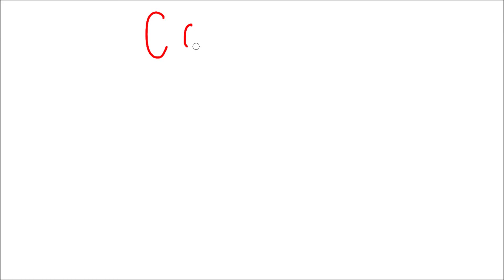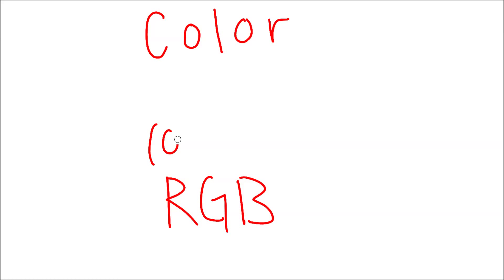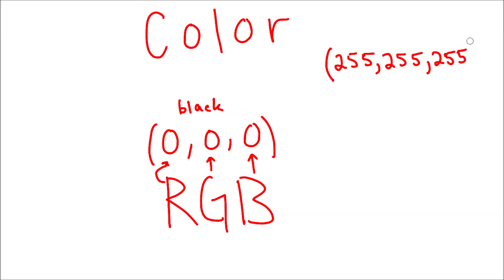There are many ways to represent color with numbers, but RGB — red, green, blue — is the simplest to understand. You assign a number from 0 to 255 to red, green, and blue to make colors. So 255, 255, 255 is white; 0, 0, 0 is black; 255, 0, 0 is red; and then you have a mix of everything in between.